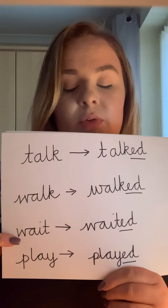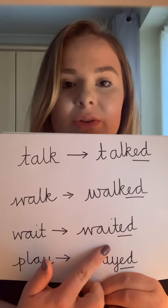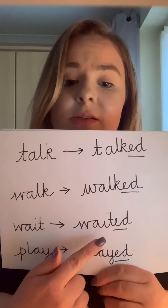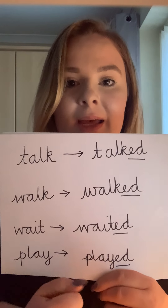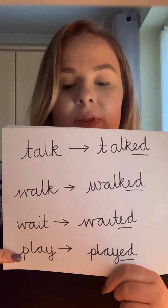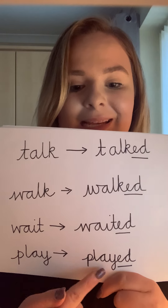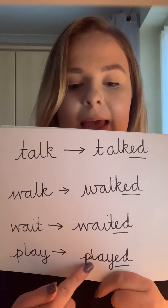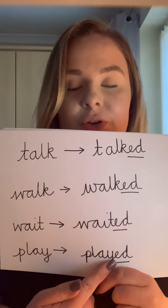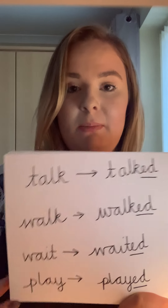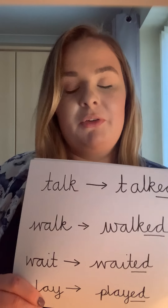The same with "wait" — I've changed it to "waited". So, I waited for my friend. "-ed" at the end. And again, with the last word, "play", I've added "-ed" — play stays the same, with "-ed" added to show that I did it in the past tense. So, I played football with my friends.